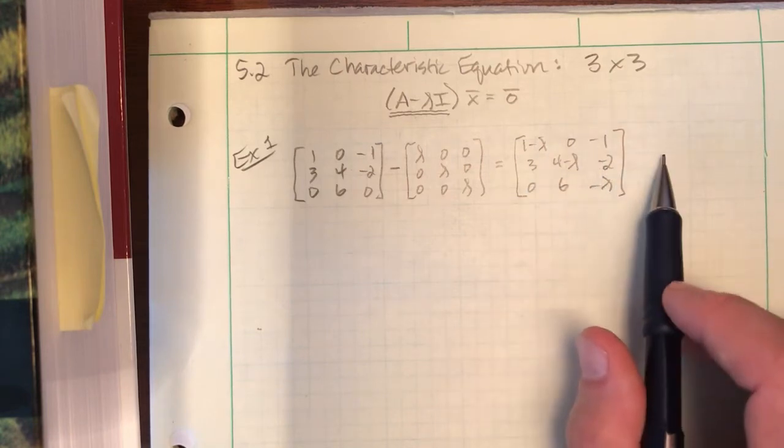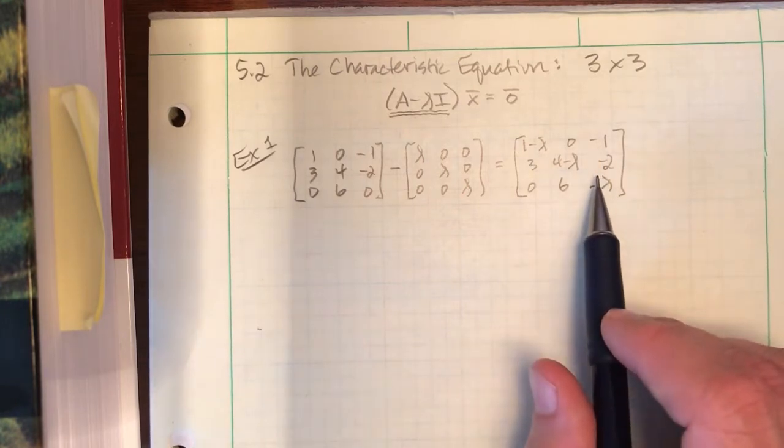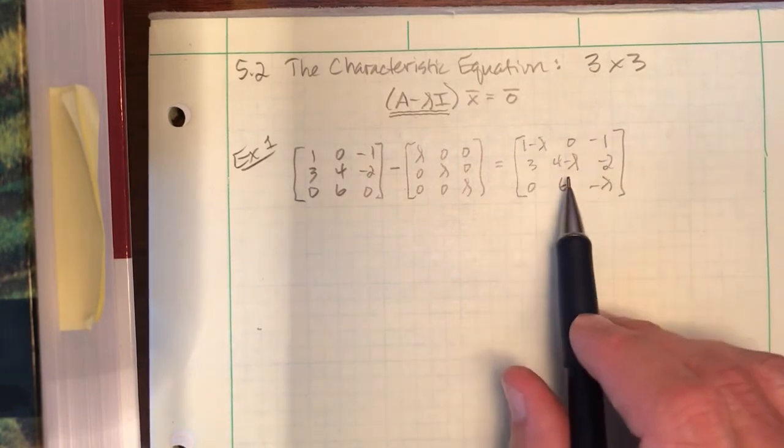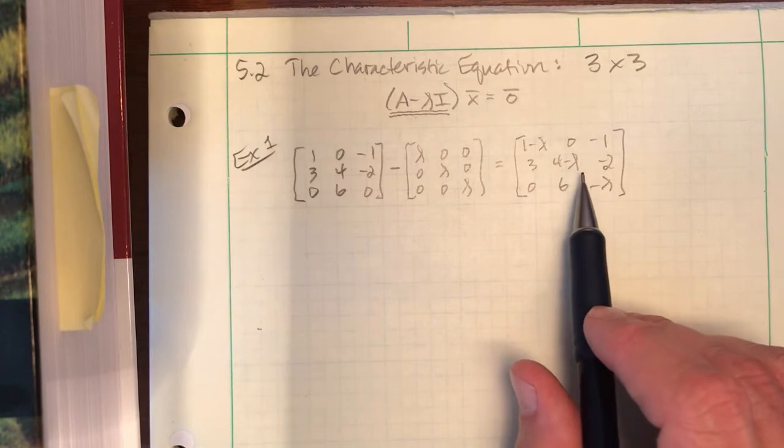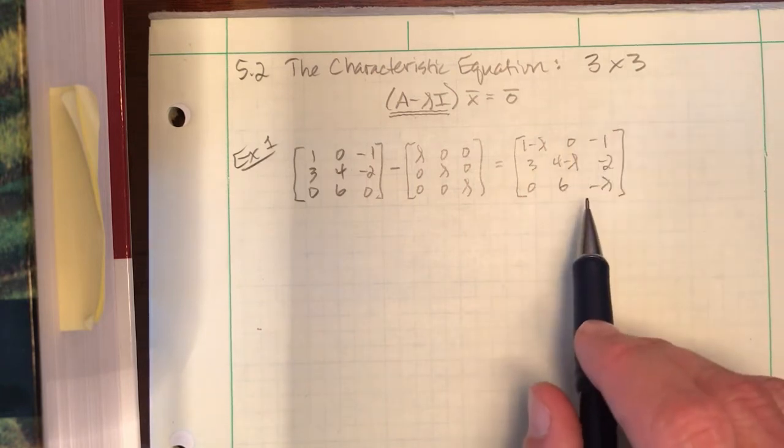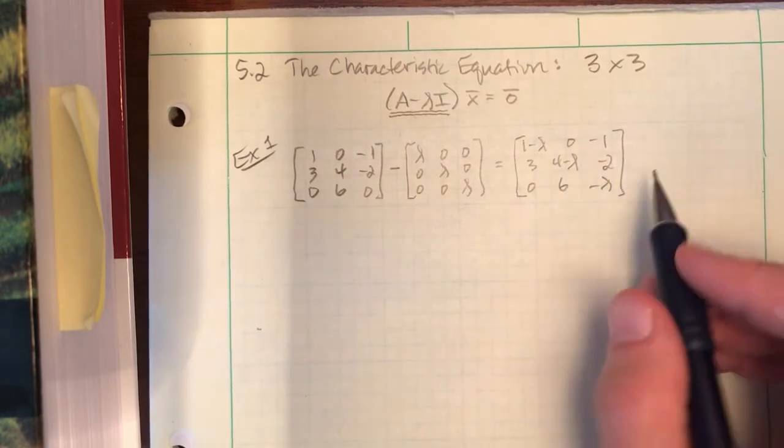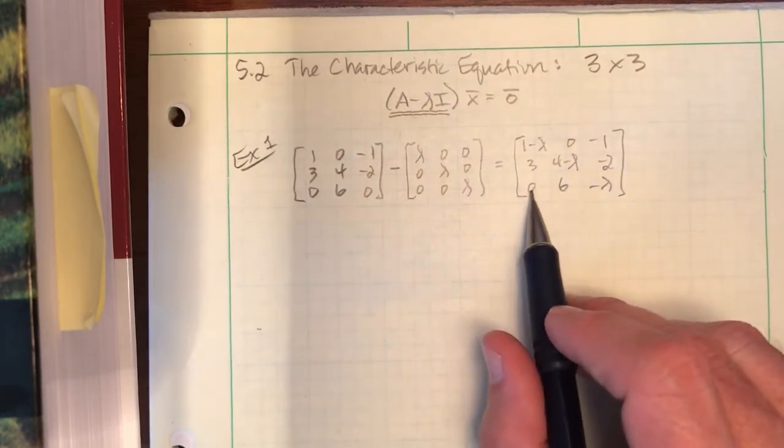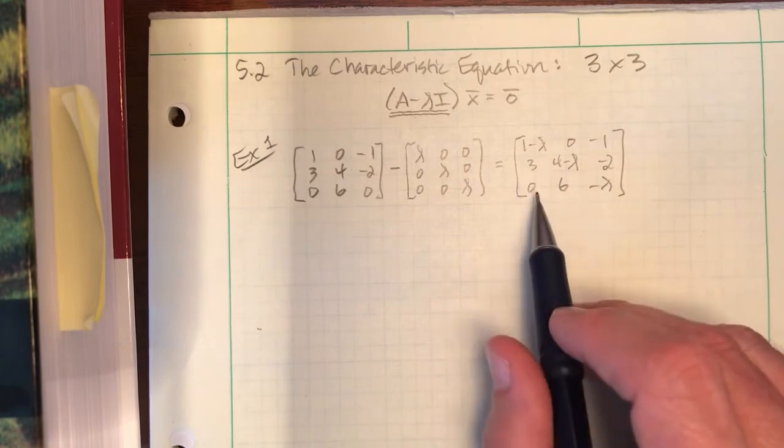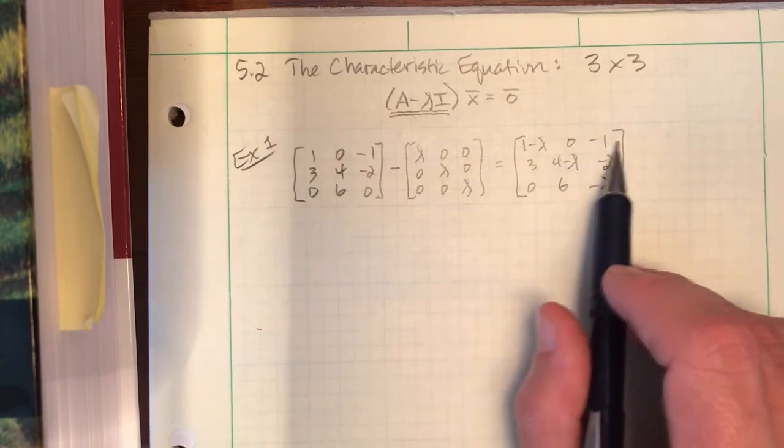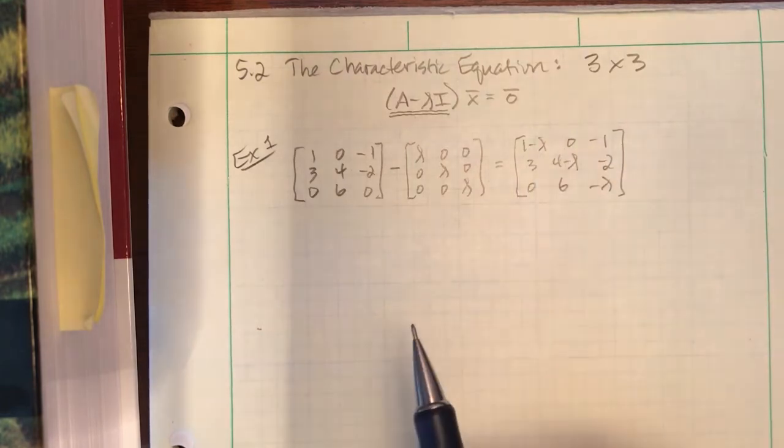Well, we know its determinant's going to be zero. Let's go through the motions for finding it. And things are a little bit different for a 3 by 3. There's two techniques I'm going to remind you of in this video. The first is the cofactor approach, which says look at any row or any column for an efficient way to get this. I'm going to look at row 1. I like the fact that there's at least one zero.